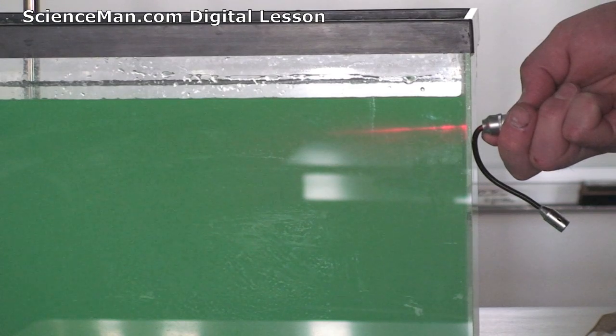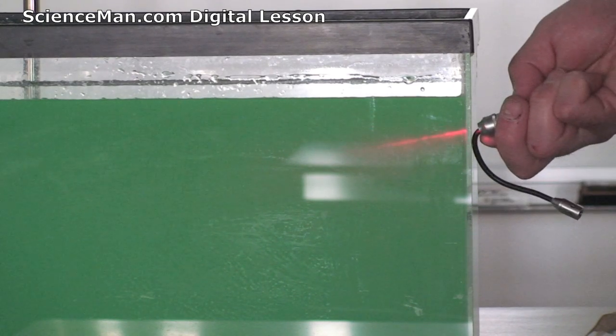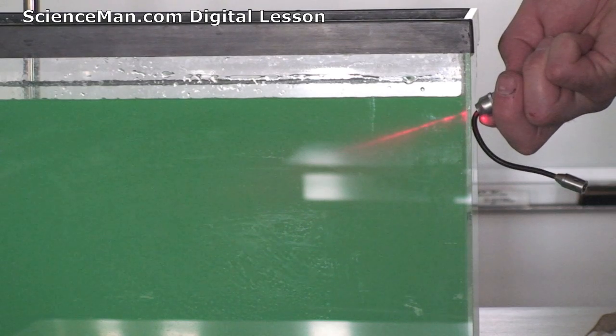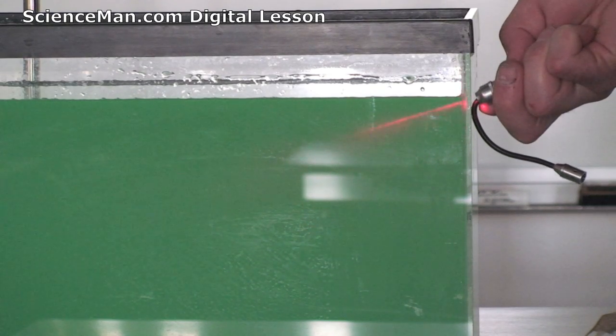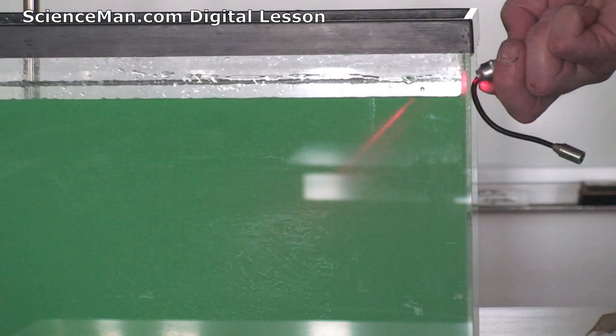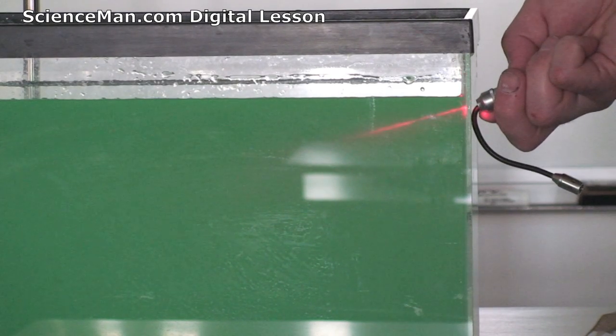So here we have our cloudy water with a little bit of coloring added and a laser beam. Now you can see the laser light travels in a straight line until we go above the surface of the water. Then the laser light bends quite significantly. Why is that occurring? Well, it's because of refraction.